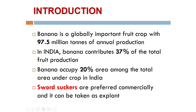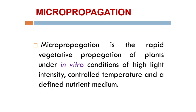For conventional propagation, we are using sword suckers. They are preferred commercially and can be taken as the explant. Before going to know about micropropagation techniques in banana, we should know what is called micropropagation and what are the stages in micropropagation. Micropropagation is the rapid vegetative propagation of plants under in vitro conditions — in vitro means laboratory conditions.